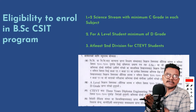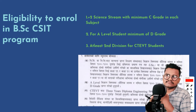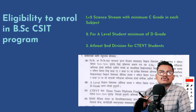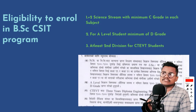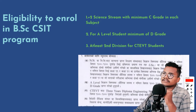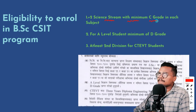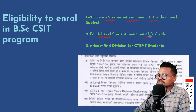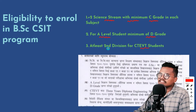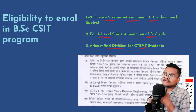Now let's talk about the BCCSIT program admission criteria. Students from a science background are eligible. Most students from science are the ones who join this course. A minimum second division is required in each and every subject, and physics, math, and a major subject are required at the plus-two level.